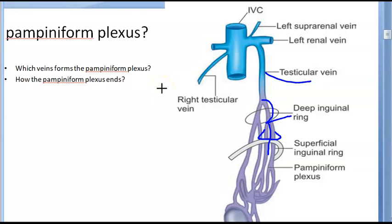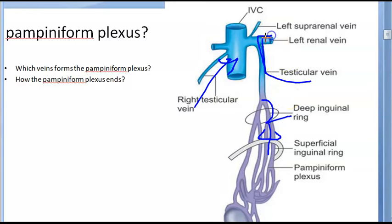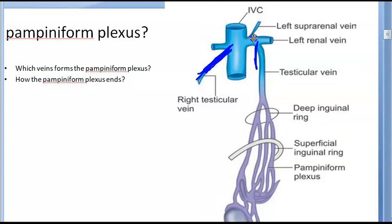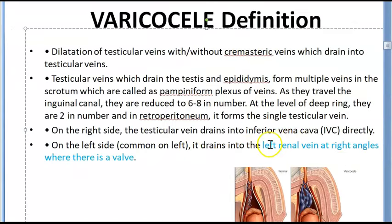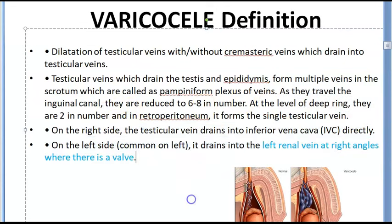On the right side the testicular vein ends at the inferior vena cava directly and ends obliquely. On the left side it ends at the left renal vein at a right angle — that 90-degree entry is an important anatomical clue. Near the termination of the testicular vein there is a valve. This valve is noted on the left side; on the right side draining into the IVC directly, a valve is not specifically mentioned.